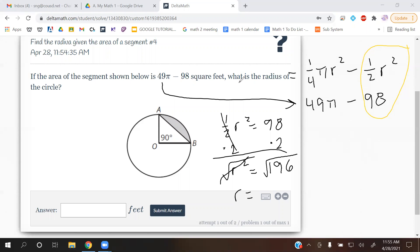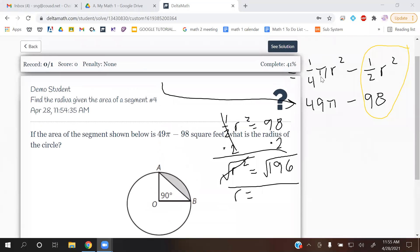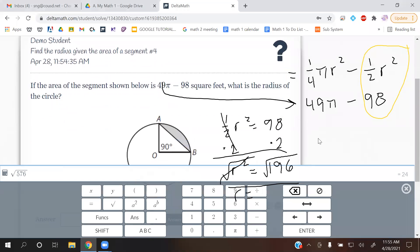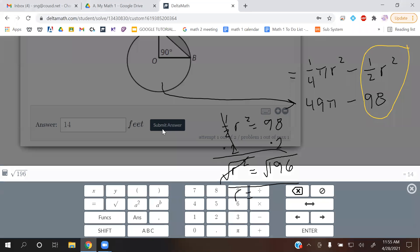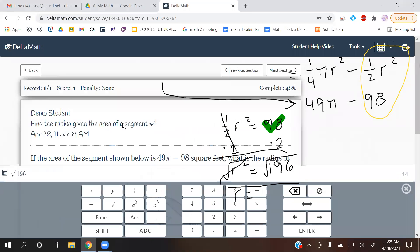We get r is equal to, I don't know that one off the top of my head. Let's type it in. Square root of 196 gives you 14.